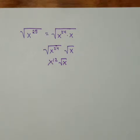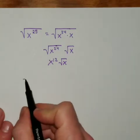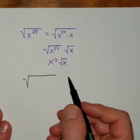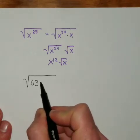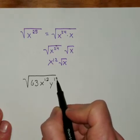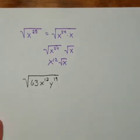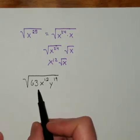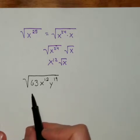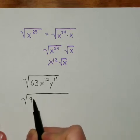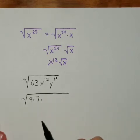Alright, now, let's look at an example where I combine a bunch of these ideas. Let's take the square root of 63, x to the 12th, y to the 19th. If I'm going to simplify that, I need to find the perfect square factors of 63, which in this case are 9 and 7. So I'm going to take the square root of 9 times 7, that's my 63.